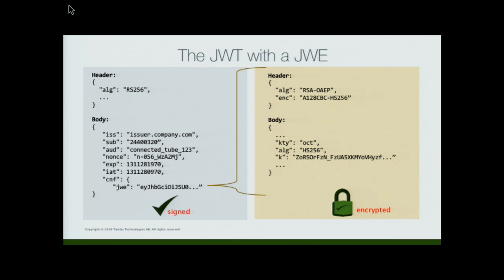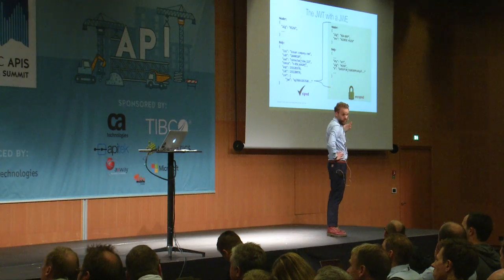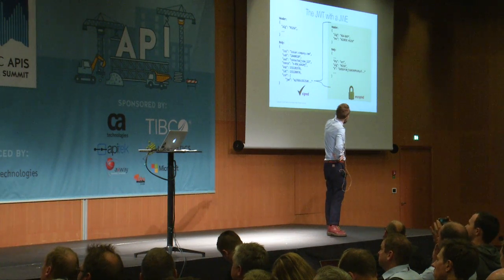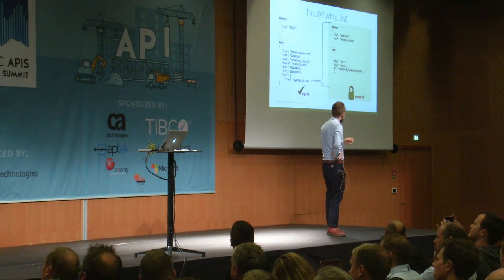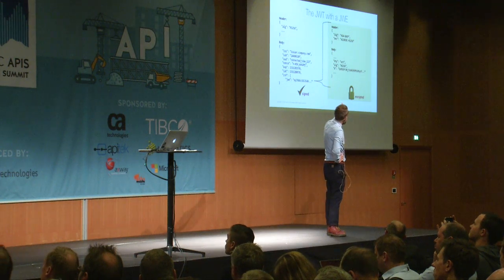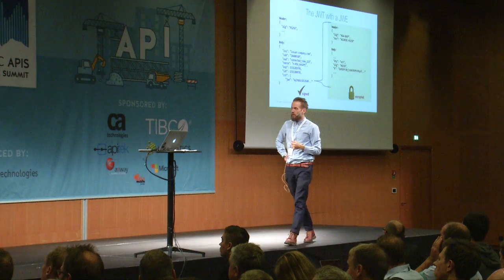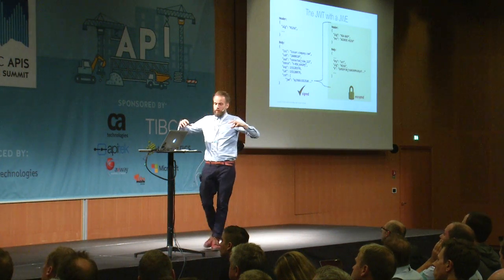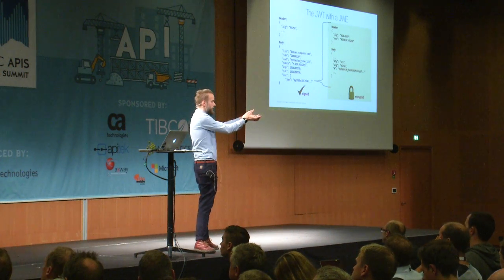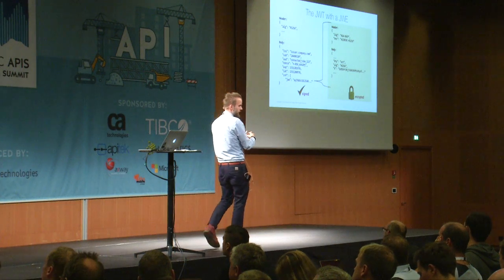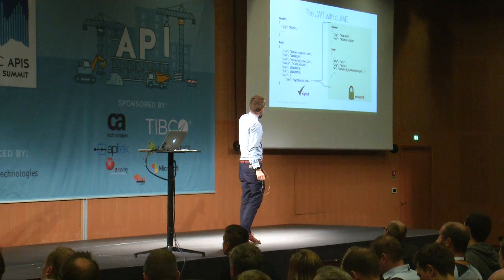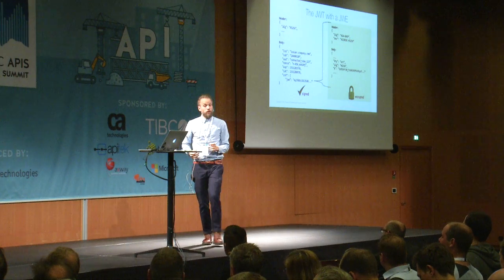So the OAuth server actually embedded something called a JWE — JSON Web Encryption, a JWT but encrypted. It put an encrypted JWT inside the first JWT. And we can see that the body of that includes actually the key we just sent. So the OAuth server encrypted the key I gave it, put it in a token, gave it back to me, and put it in a signed token that I could present to someone.